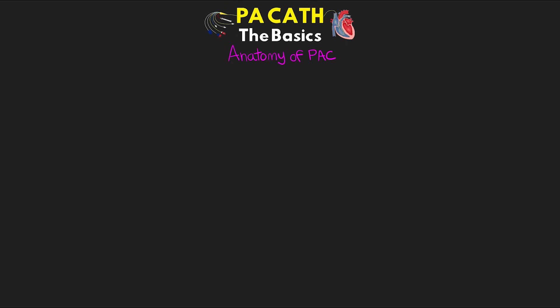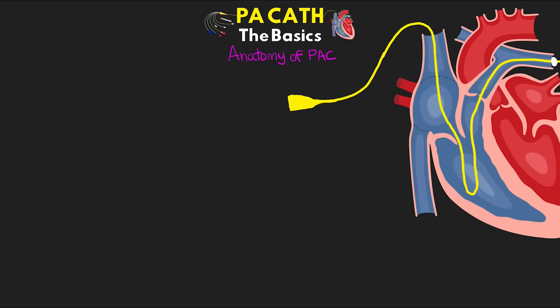Now let's talk about the anatomy of the PA catheter and the associated measurements. I want to preface this by saying I'll cover the very basics — there are many different versions of this catheter that can provide additional measurements and information. Our basic pulmonary artery catheter has four lumens. The white port is the proximal infusion port — it's around 31 centimeters from the tip and is used to infuse fluids or medications, typically terminating in the vena cava or right atrium.